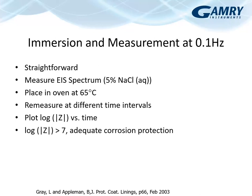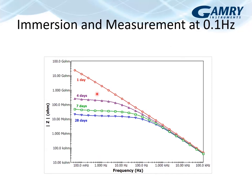The immersion and measurement at 100 mHz approach is straightforward: measure an EIS spectrum, put the system in an oven, remeasure at different time intervals, and plot versus time. If your plot slope is greater than 7, you have adequate corrosion protection. These are complete EIS spectra at different time values — but what you track is the 100 mHz point. Changes at lower frequencies are much more dramatic and easier to distinguish than at higher frequencies.